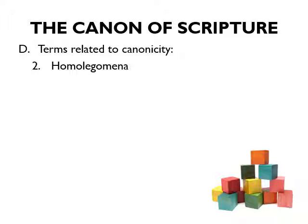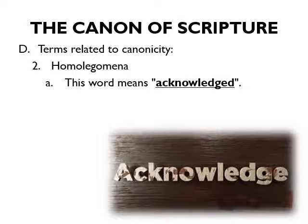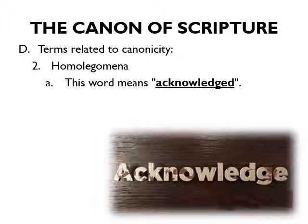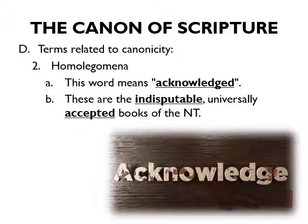Now that we've talked about the Old Testament Apocrypha, let's turn to the second term related to canonicity — my favorite word in theology: homologoumena. This word means 'acknowledged.' It's Greek — 'homo' meaning same, 'lageo' meaning thinking. These are the acknowledged scriptures that no one disputed about whether or not they should be included in the New Testament. They are the indisputable, universally accepted books of the New Testament.